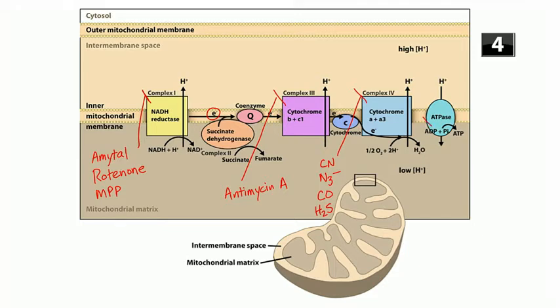The ATPase enzyme can be inhibited by the macrolide antibiotic oligomycin A. It's not an antibiotic we use clinically, but it is still a macrolide.